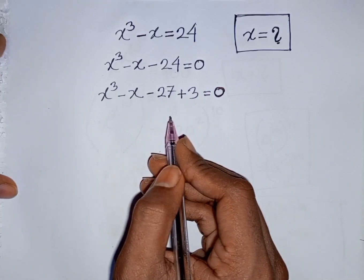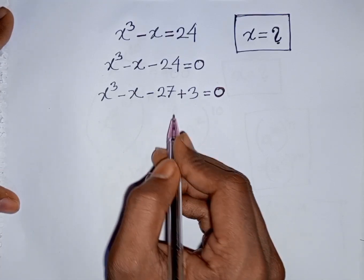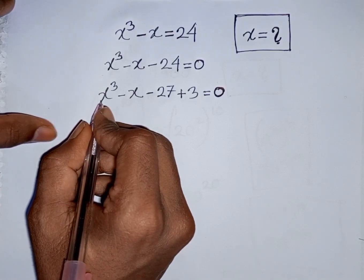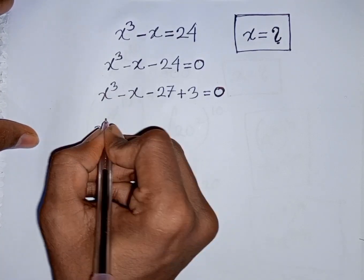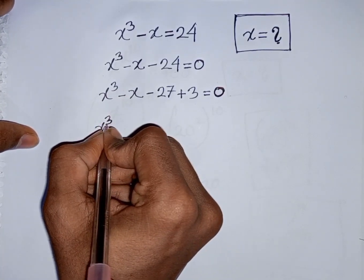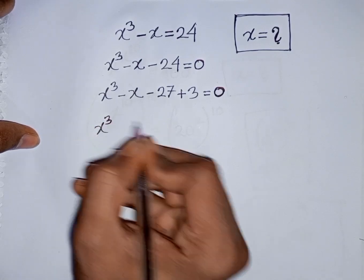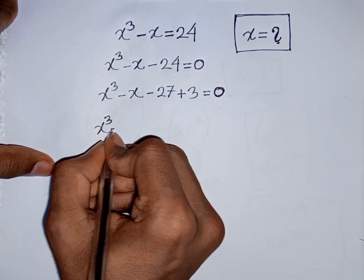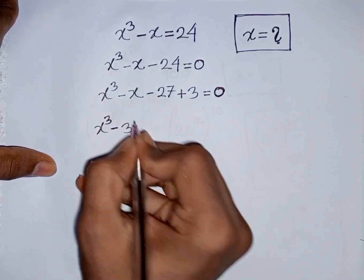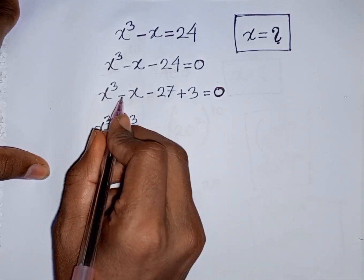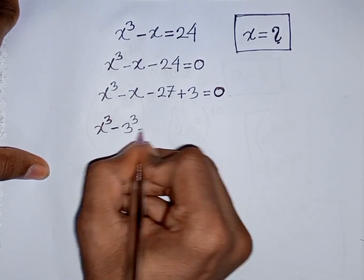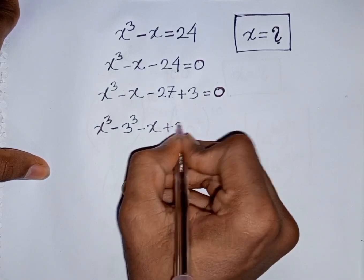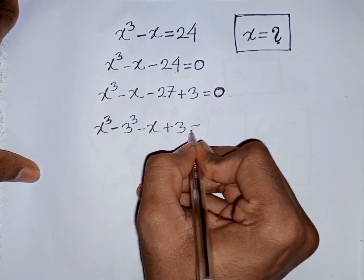Most of the time you can understand this process. Now we have x³ minus 27, which is the same as x³ minus 3³, then minus x plus 3 is equal to 0.